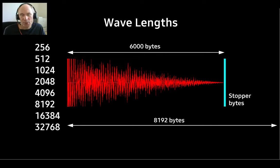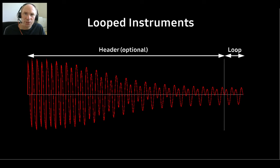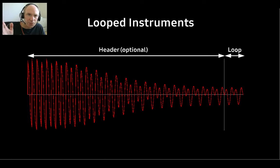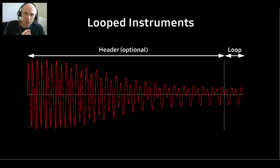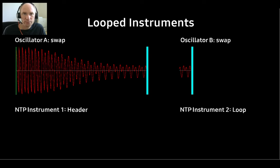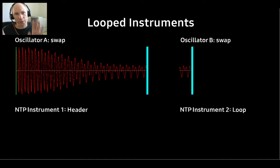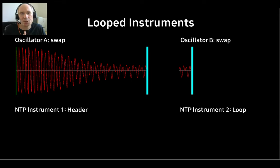What about looped instruments? In a module, you can set a repeat pointer for each instrument. If it points to the beginning of the wave, the whole instrument is looped. If the repeat pointer is somewhere in the wave, you end up with a header and a loop. To play this instrument with our oscillators, we split it into two separate waves — the header and the loop itself. We use an oscillator pair: an even-numbered A and an odd-numbered B. A plays the header in swap mode, and B plays only the loop, also in swap mode.